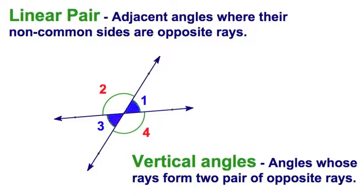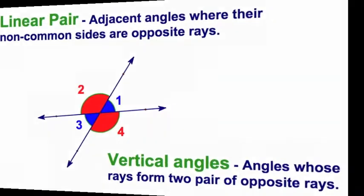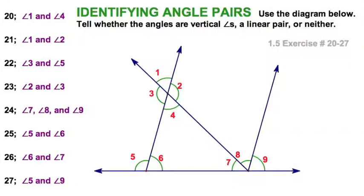And my fourth linear pair, angles one and four. And of course the vertical angles would be one and three, two and four. So looking at this diagram this way, I could say one red and one blue—that's going to be a linear pair. A pair of red or a pair of blue—that's a vertical angle. That diagram is going to come in handy, so keep it in mind.